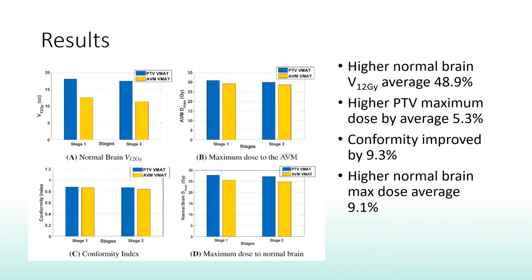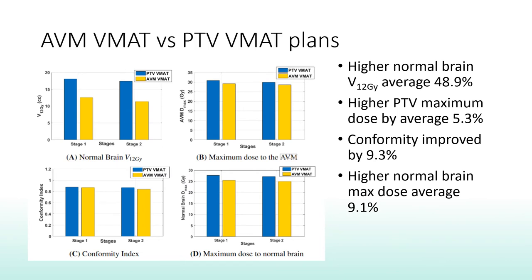Moving on to some of our results, PTV VMAT plans showed that on average the V12 Gy was increased by almost 50% with respect to the AVM plans. PTV maximum dose was also higher, conformity for each target improved slightly as expected with the larger volume, and normal brain maximum dose was also increased.